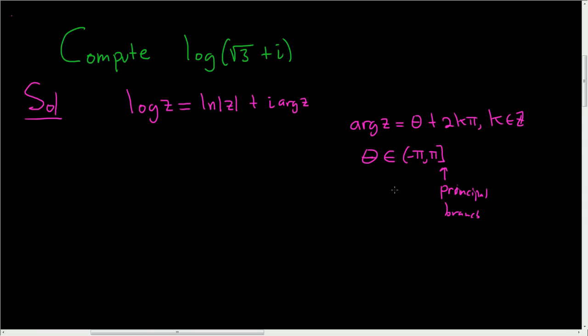So the first thing we should do in this video is find the modulus and argument of our complex number. So we can write the square root of 3 plus i as r cosine theta plus i sine theta.